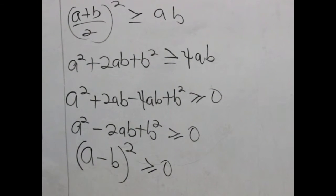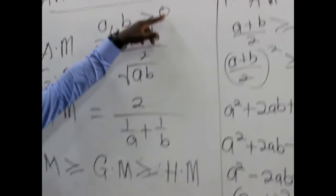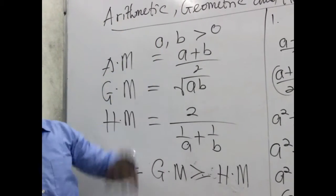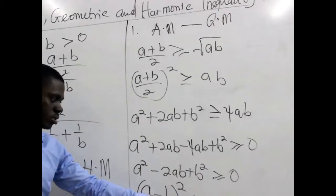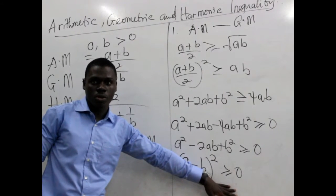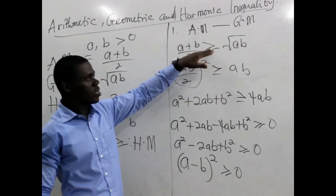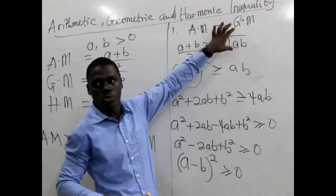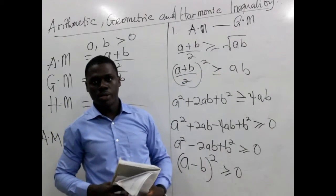We already stated that A and B are positive values. It means if we subtract one from the other and square the result, it is going to be either greater than 0 or equal to 0 — it cannot be less than 0. That means this statement is true, confirming that arithmetic mean is greater than or equal to the geometric mean.